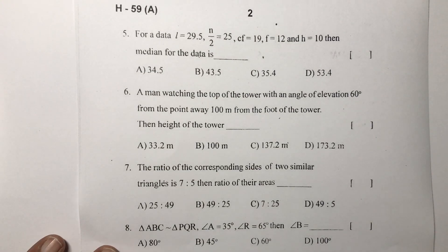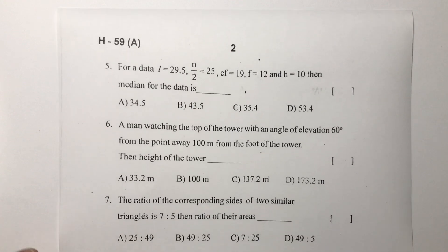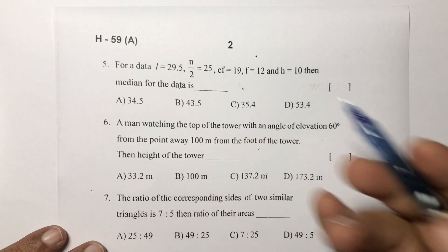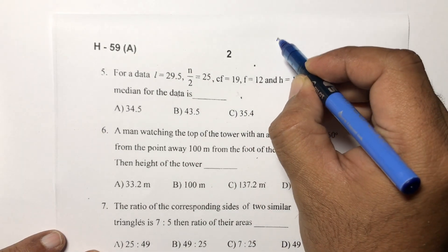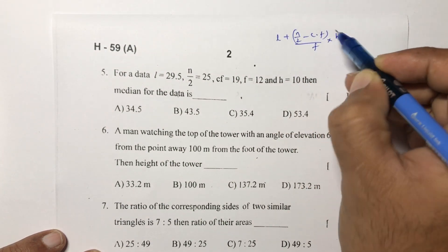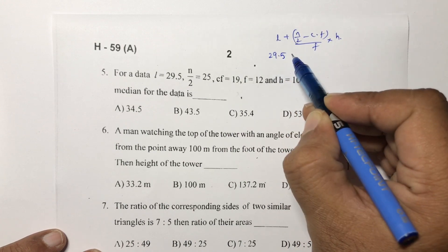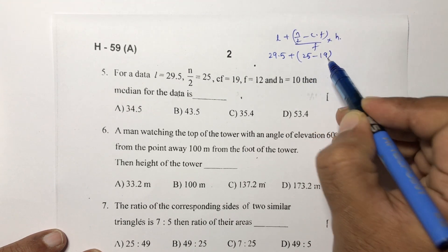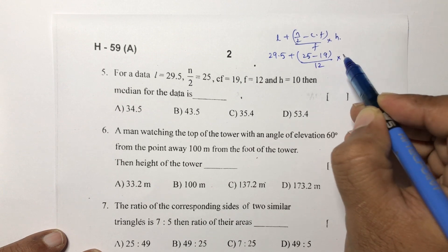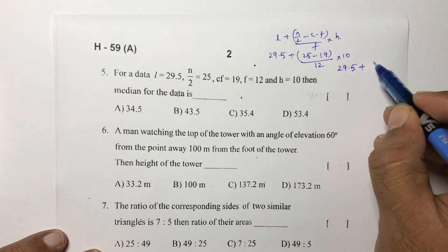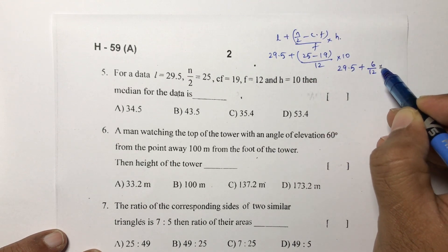For a given data, fifth question, they are asking median. The median formula is L plus n by 2 minus Cf by f into h. L value is 29.5 plus n by 2, directly negative 25 minus Cf which is 19, by f 12 into h. 29.5, 25 minus 19 is 6 by 12 into 10.